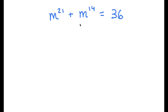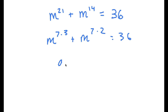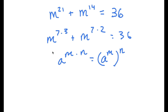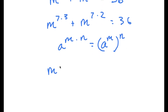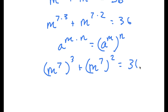So in this problem, I have m to the power of 21 plus m to the power of 14 is equal to 36. First, we write m to the power of 21 as m to the power of 7 times 3, and m to the power of 14 as m to the power of 7 times 2. Using the rule that a to the power of m times n equals a to the power of m to the power of n, we get m to the power of 7, all to the power of 3, plus m to the power of 7, all to the power of 2, equals 36.